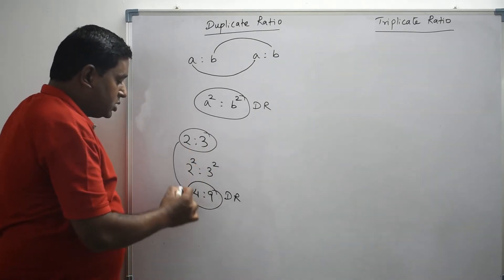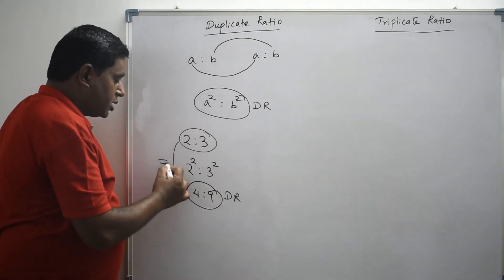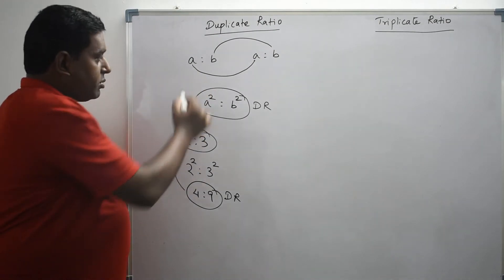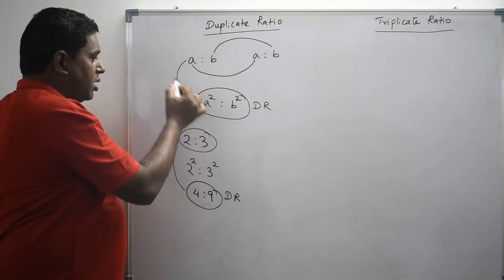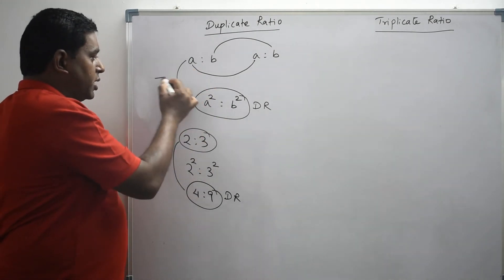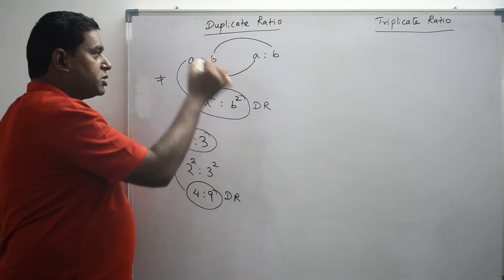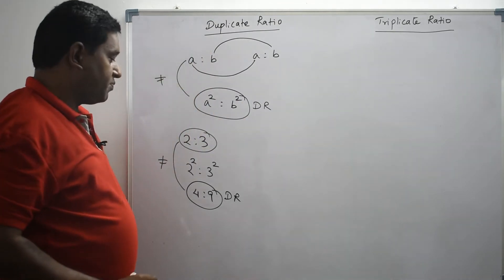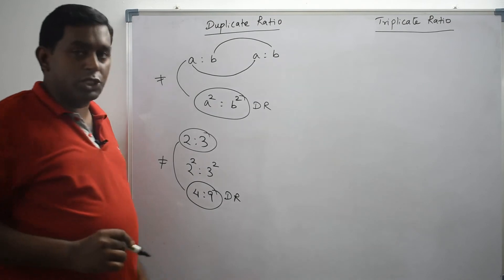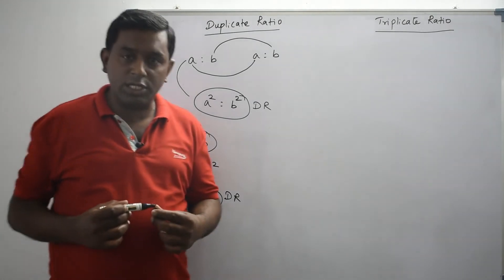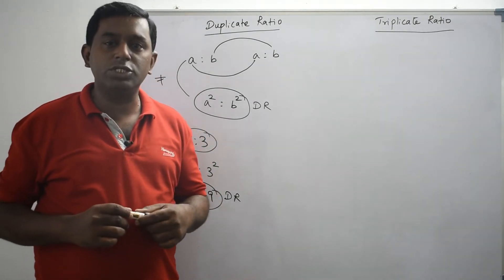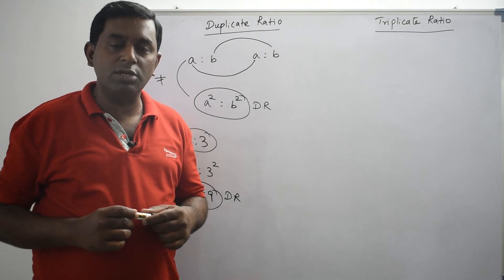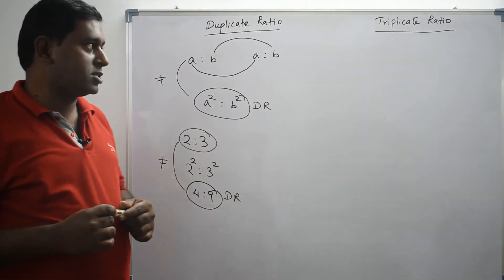Note that these two ratios are not equal — that is, A is to B and A square is to B square are not equal. A square is to B square is the duplicate ratio of A is to B. So, if you want to get the duplicate ratio for a given ratio, you have to square both the first term and second term.